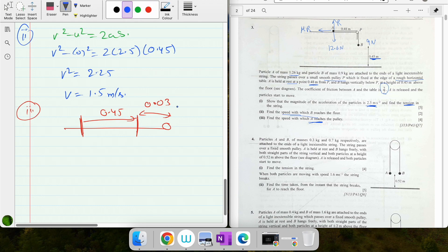We have to find the speed with which it reaches the pulley. When they are connected they have the same acceleration and same speeds. B reaches the bottom with 1.5 meters per second, so A will reach this point with 1.5 meters per second. From this point to this point we are going to solve.